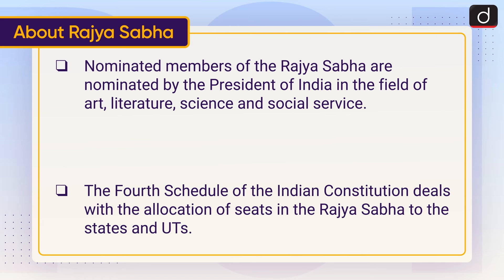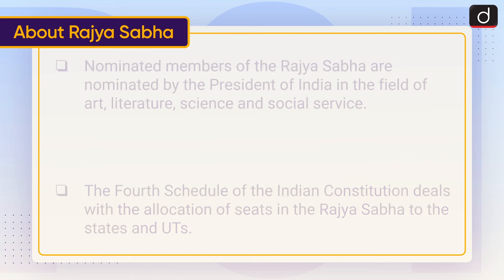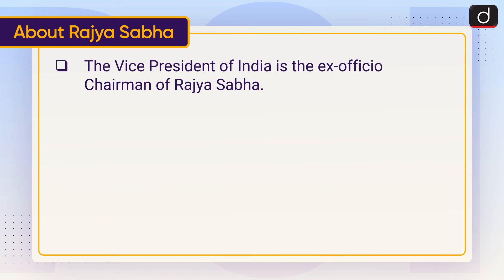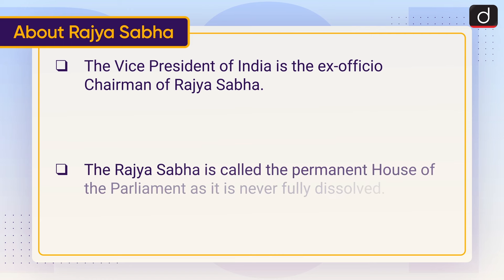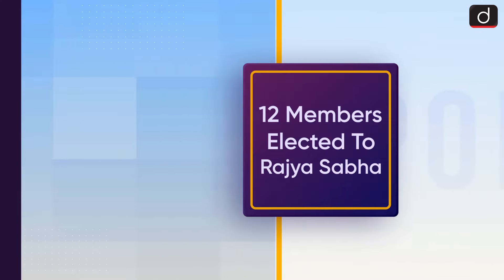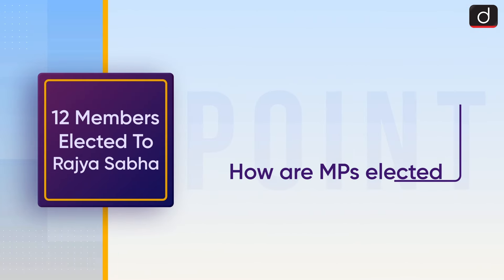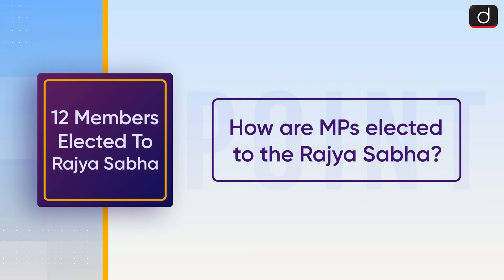The Fourth Schedule of the Indian Constitution deals with the allocation of seats in the Rajya Sabha to the states and the Union Territories. The Vice President of India is the ex-officio Chairman of the Rajya Sabha. The Rajya Sabha is called the permanent house of the Parliament as it is never fully dissolved.